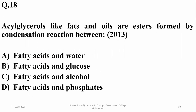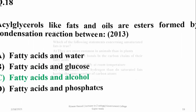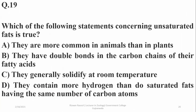Acylglycerols — like fats and oils — are esters formed by condensation reaction between fatty acids and alcohol, which is normally glycerol. Which of the following statements concerning unsaturated fats is true? It is beta: they have double bonds in the carbon chains of their fatty acids.